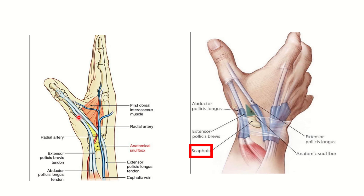Here we can see the anatomical snuffbox. The anterolateral boundary is formed by extensor pollicis longus, and the posterior medial boundary is formed by two tendons: abductor pollicis longus and extensor pollicis brevis. Through the anatomical snuffbox, the radial artery passes. There is also a vein present — the cephalic vein. So two important structures pass through the snuffbox: the radial artery and the cephalic vein.